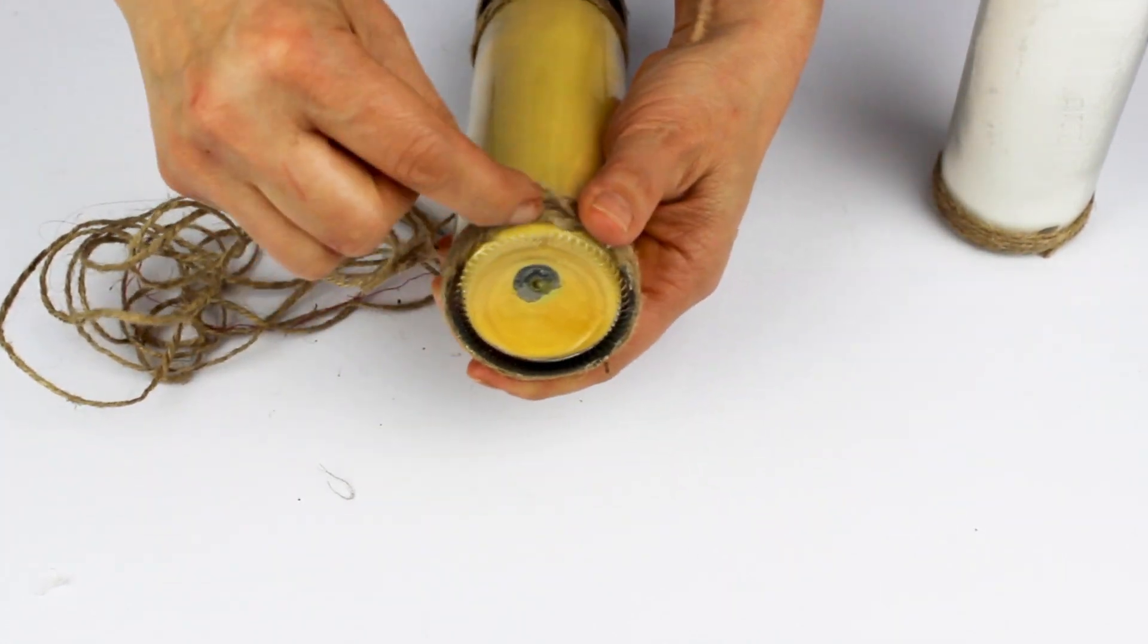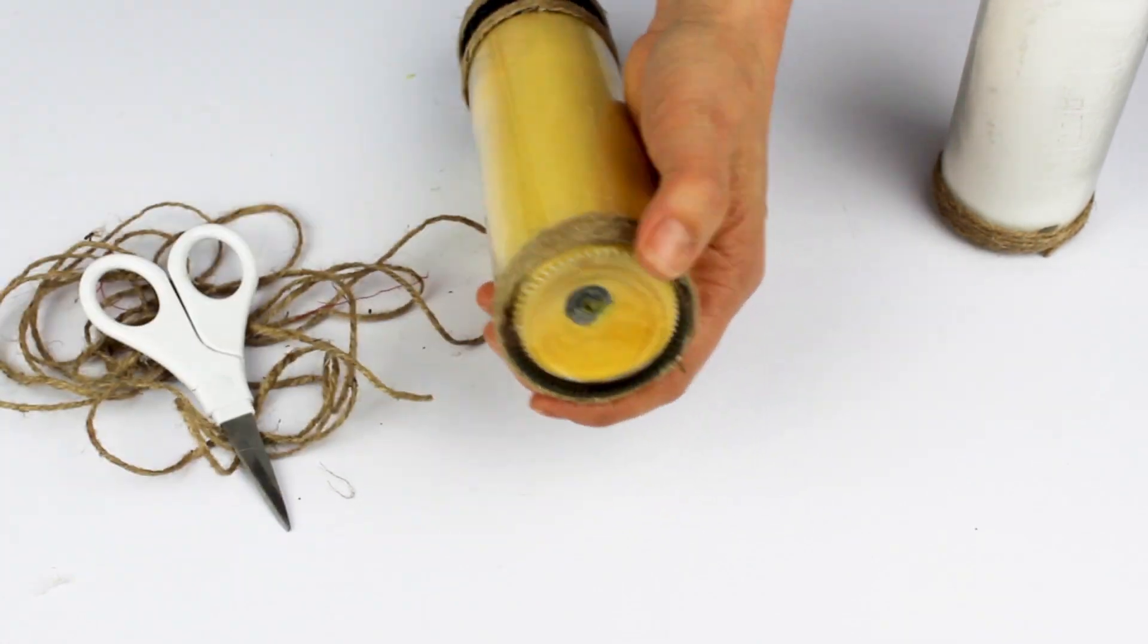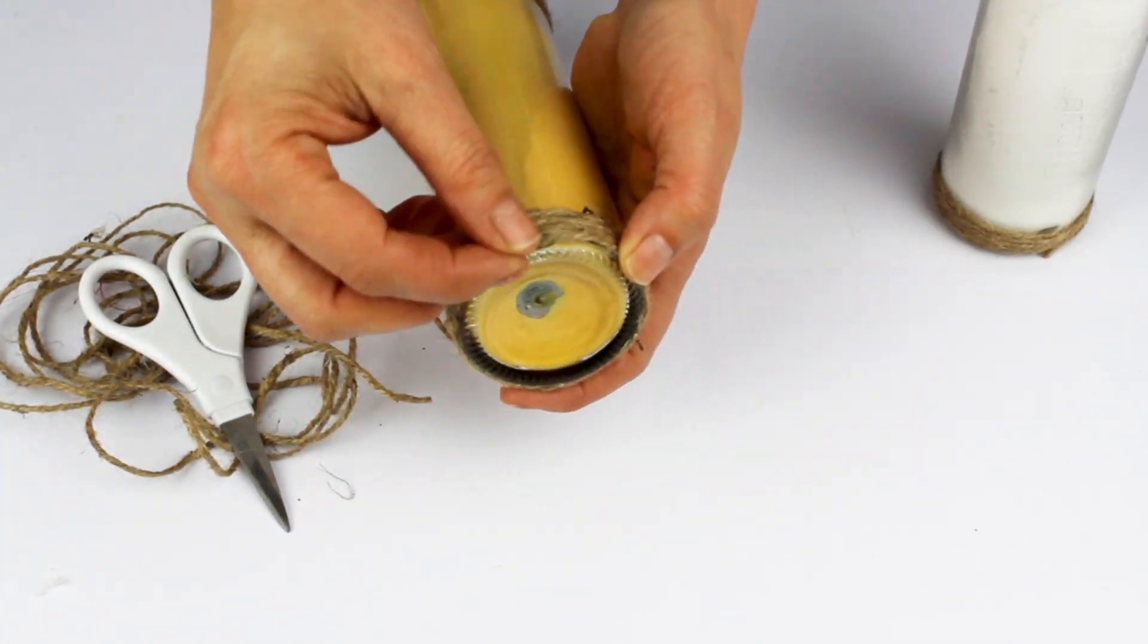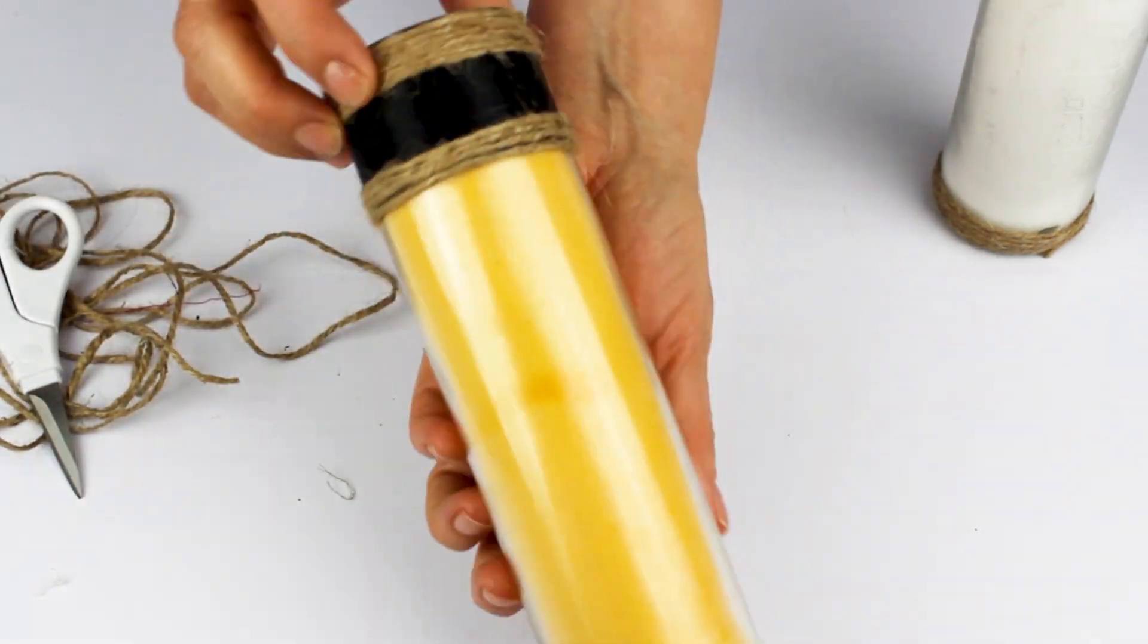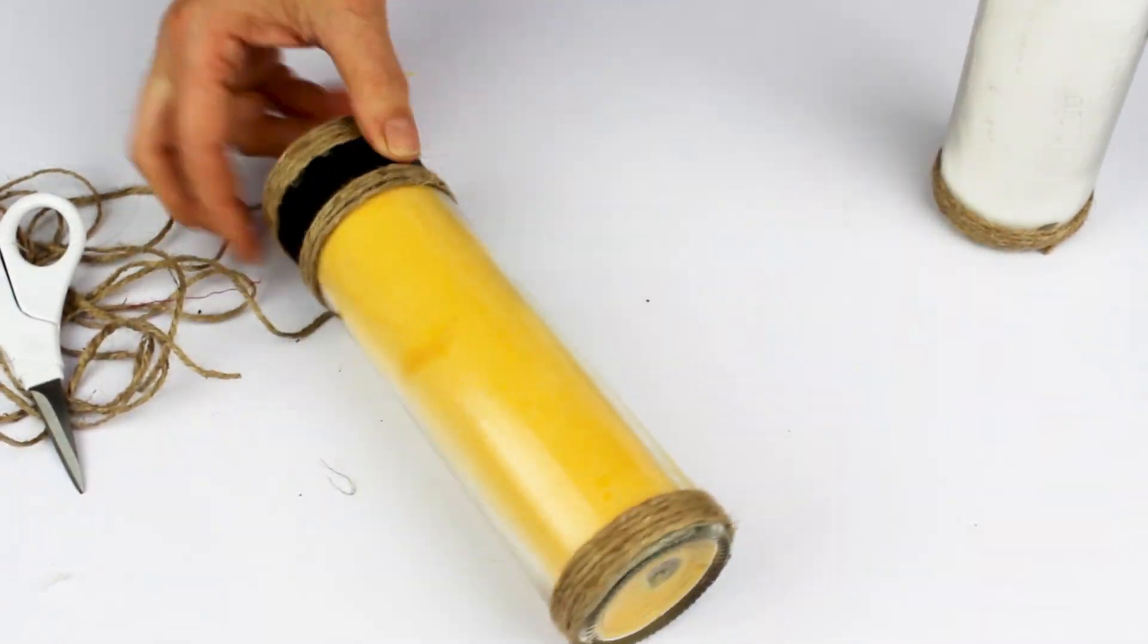Now it's time to customize them using permanent vinyl, and we're going to cut it with a Cricut machine. You may use any Cricut machine.